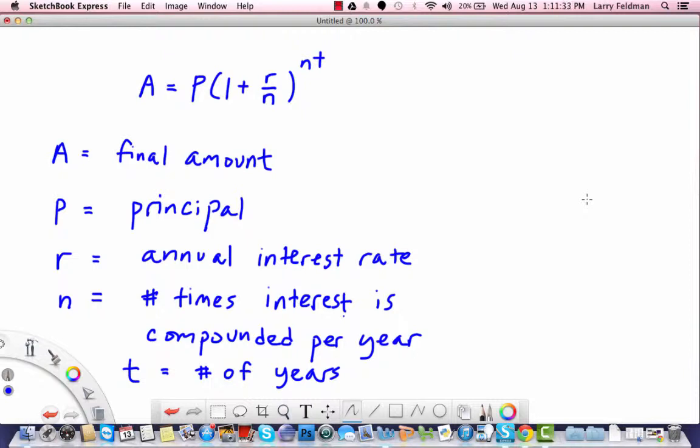As I wrote, A is the final amount and P is the principal. So if you invest an amount of money, P, at a specific time, A will be the amount of money that you have after a certain amount of time, T, elapses.